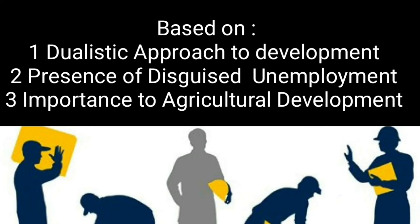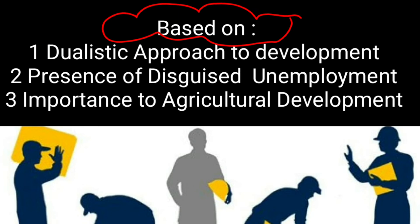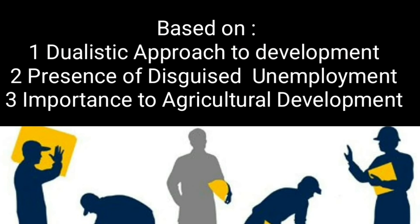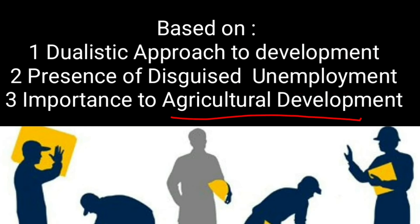The Fei-Ranis model is based on three pillars. Number one, the dualistic approach to development. Second, there is presence of disguised unemployment in the rural sector. And lastly, it gave importance to agriculture development, which the Lewis model did not pay attention to.